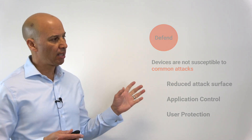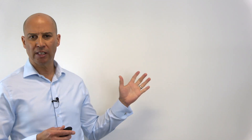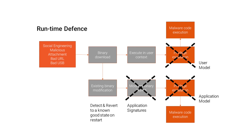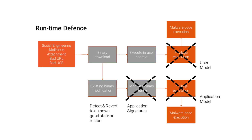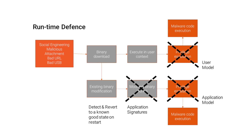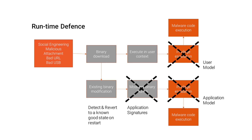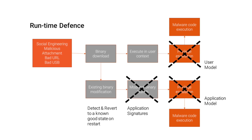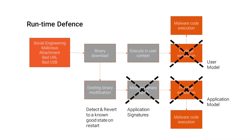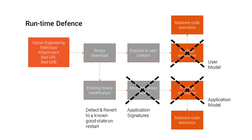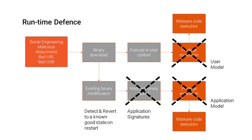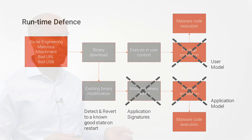Thinking about typical attack vectors: a bad attachment or a bad URL accessed by a user might cause some code to attempt to execute within the user context, or it might try to modify an existing binary on the system and then gain privilege escalation to carry out some form of attack. The user model and application model we've implemented prevents both of those from occurring. And of course, the application signatures mean that any modification would be detected on the next system start.